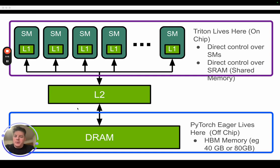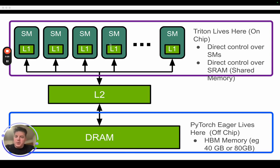By contrast, PyTorch Eager primarily lives here in your HBM global memory. To put it in bigger context: if you had an AI model, you would load it up in CPU, move it over to GPU global memory, and then as instructions come in, data and instructions get moved to the SMs to do the work and then brought back.